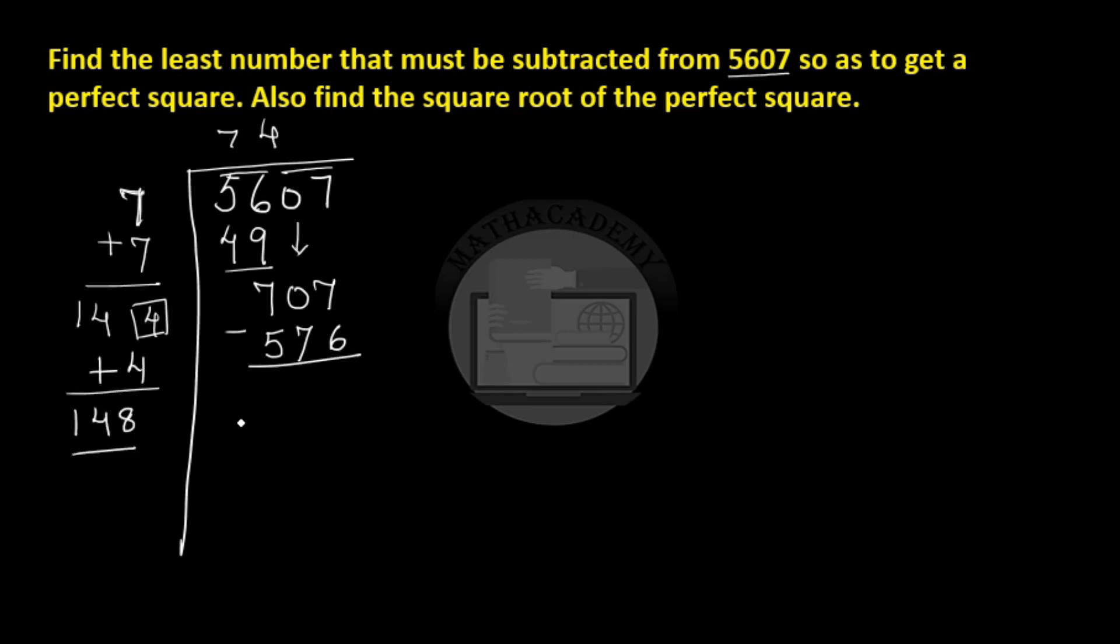707 minus 576 gives us 131 as our remainder. Now the least number that must be subtracted from 5607 is this number that's remaining. So if we remove that number from 5607, whatever we get should be a perfect square number.